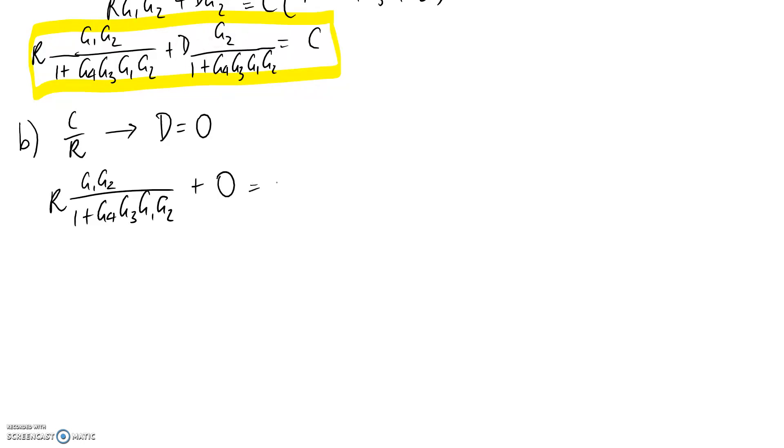It has to be equal to C on the other side. Now when we want C divided by R, this is going to divide to the other side of the equation, and all that we're left with is this part here. So that becomes our transfer function for C on R.